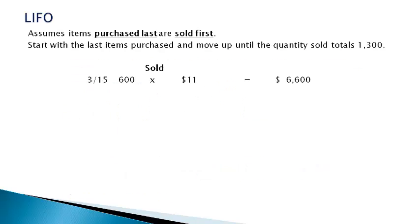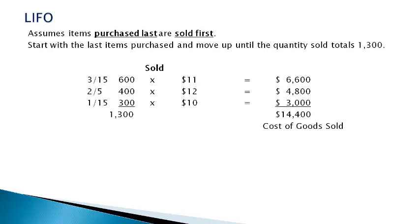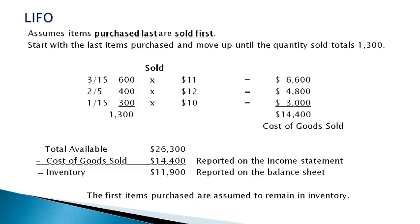The LIFO method assumes the items purchased last are sold first. Start with the items at the bottom of the list that were purchased last and list them as sold first. Work up until you get to a total of 1,300. The value of these items is the cost of goods sold. The total available less the cost of goods sold is the value of inventory remaining in the warehouse. The first items purchased are assumed to remain in inventory.